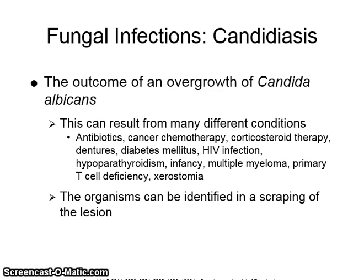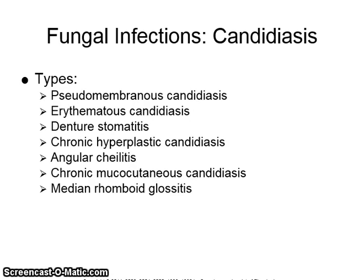The organisms can be identified in a scraping of the lesion. There are different types of candidiasis: pseudomembranous, erythematous, denture stomatitis, chronic hyperplastic, angular cheilitis, chronic mucocutaneous, and median rhomboid glossitis.